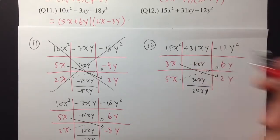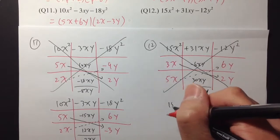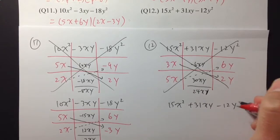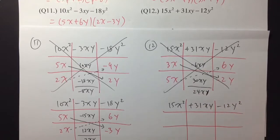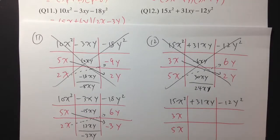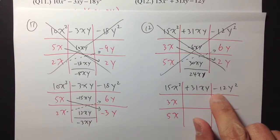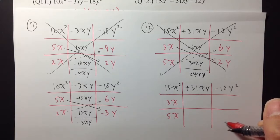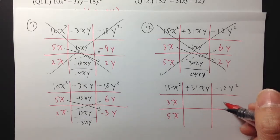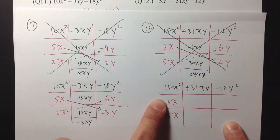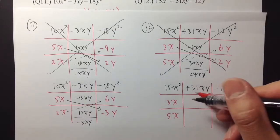So I will try 15x squared plus 31xy minus 12y squared again with another combination. Here let's do maybe 3x and 5x again. I need to produce negative 12 — let me try 4 and 3. But if I put 4 right here, 4 times 5 will be 20. And if I put 3 right here, 3 times 3 will be 9. So I don't think that will somehow add up to 31.